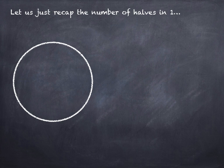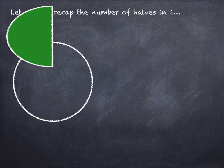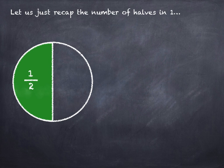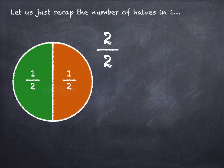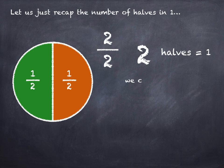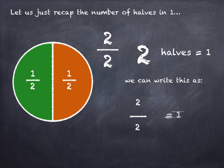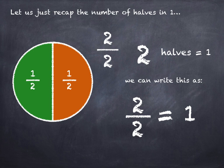Let us just recap the number of halves in one. One half. Two halves. Two halves equals one, and we can write this as two out of two equals one. Two halves equals one.